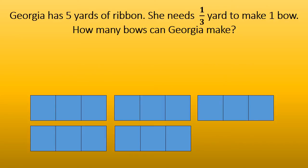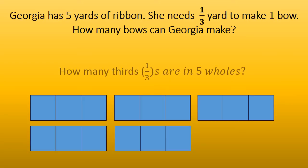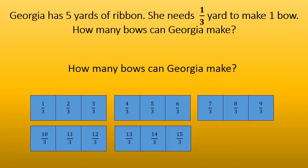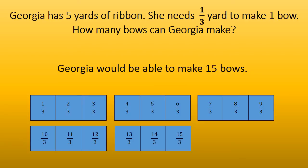Now we have our wholes divided into thirds. We can count and see how many thirds are in five wholes. There are three thirds in one yard, so there are going to be fifteen thirds in five yards. Georgia will be able to make fifteen bows.